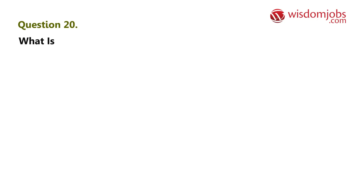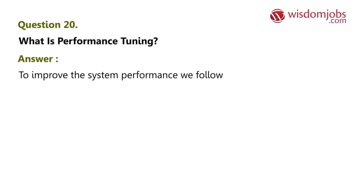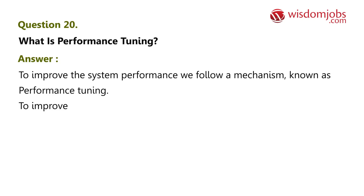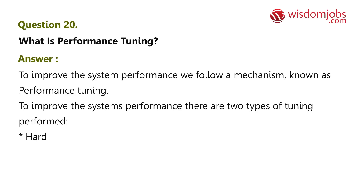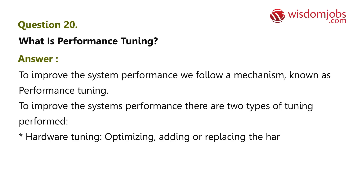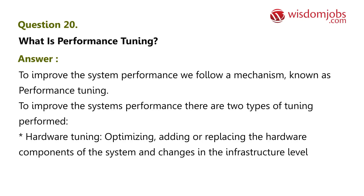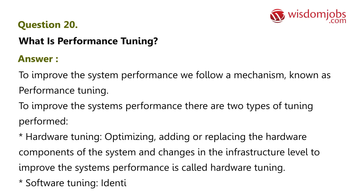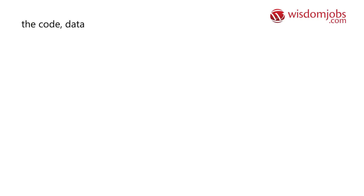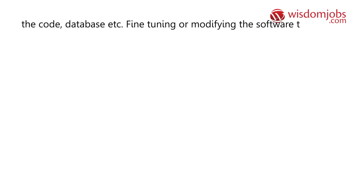Question 20: What is performance tuning? Answer: To improve system performance, we follow a mechanism known as performance tuning. There are two types: Hardware tuning — optimizing, adding, or replacing the hardware components of the system and making changes at the infrastructure level to improve performance. Software tuning — identifying software-level bottlenecks by profiling the code, database, etc., and fine-tuning or modifying the software to fix the bottlenecks.